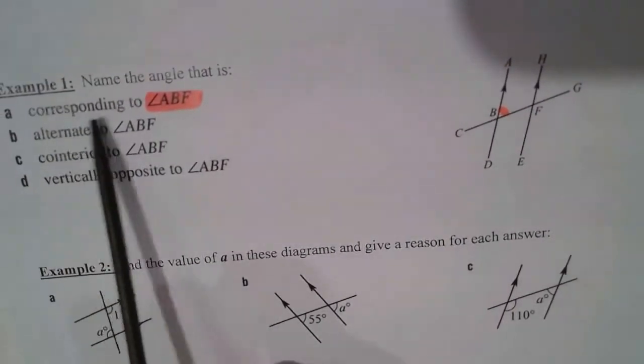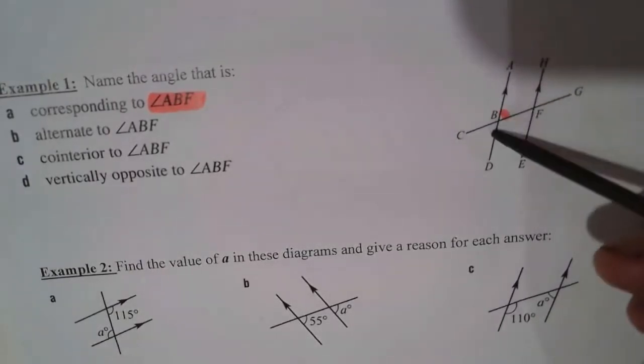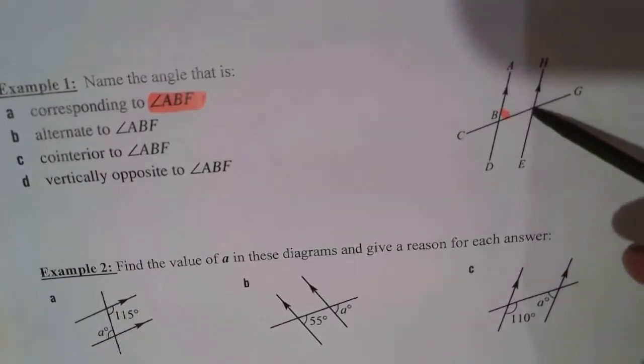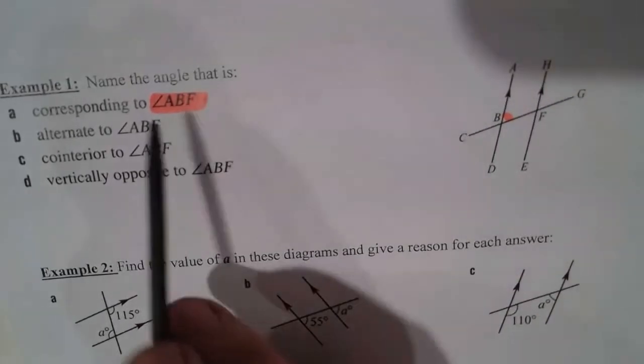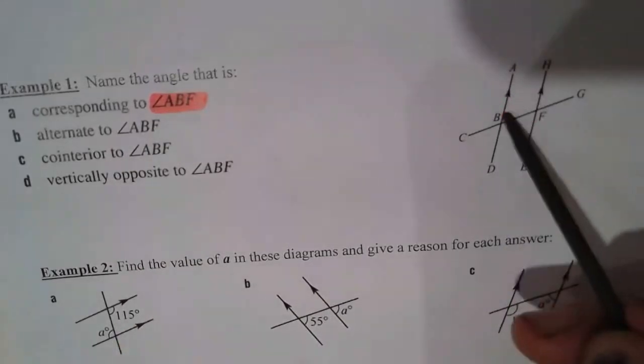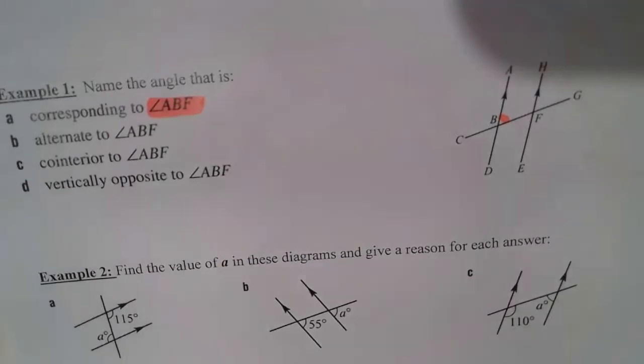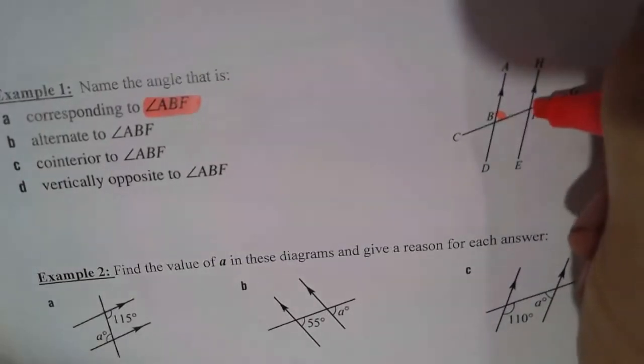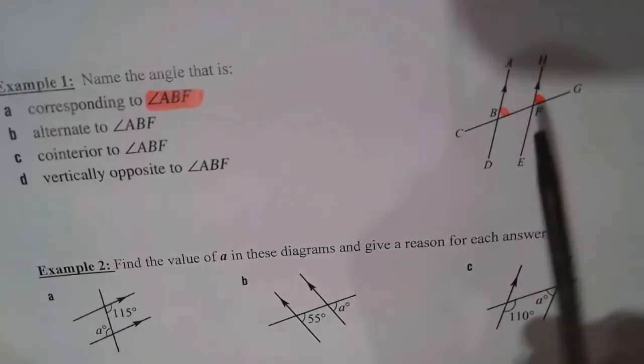So in this example, we're on a corresponding angle to ∠ABF. We could also call this ∠ABG, this angle, and also remember, you have to have the angle symbol in front of it, but both of them would clearly show us to this angle. So in this case, the corresponding angle to ∠ABF is over here, because that's on the same side of the transversal.